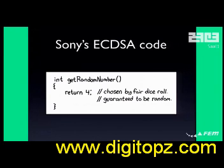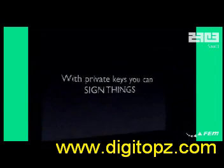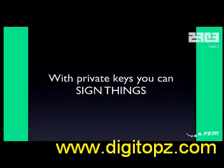As explained, if you use the same M, you can calculate K once you have two signatures. And if you have K, well, that's a private key. And with a private key, you can sign things.